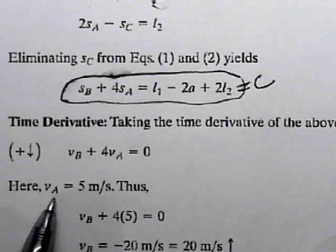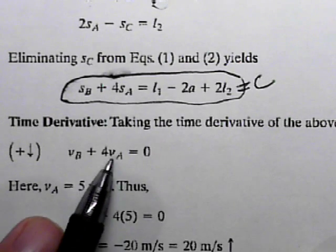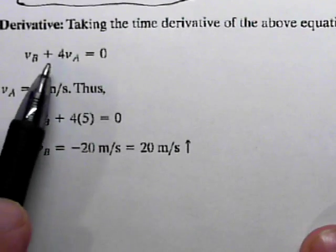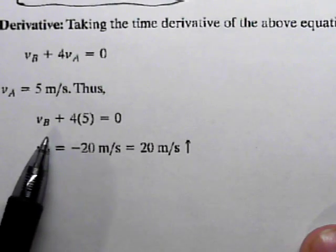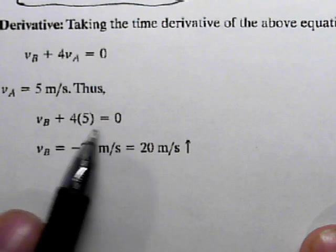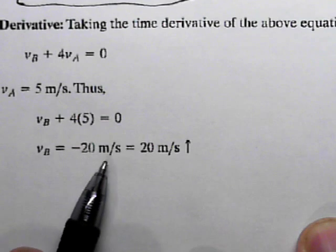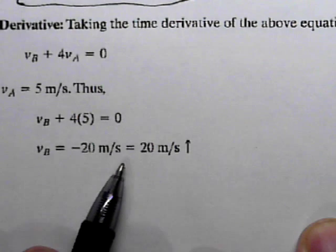And so, we were told that V_A is 5 meters per second. We can plug that into there. And from our equation, learn that V_B plus 4 times 5, which is 20, equals zero. Our V_B is equal to minus 20 meters per second. Okay.